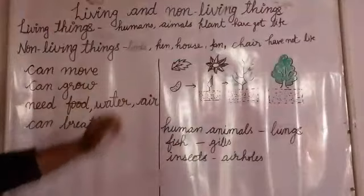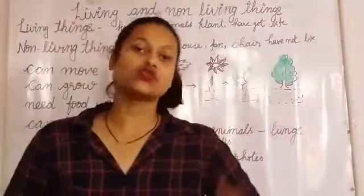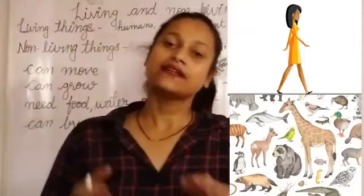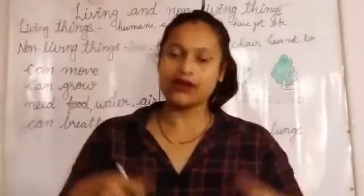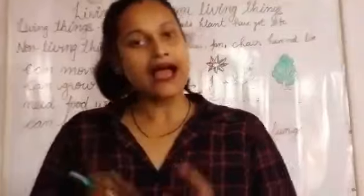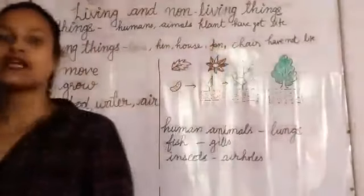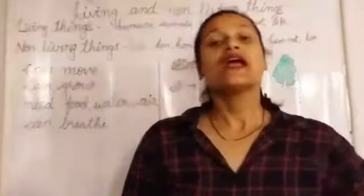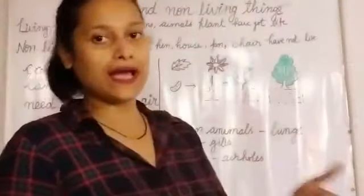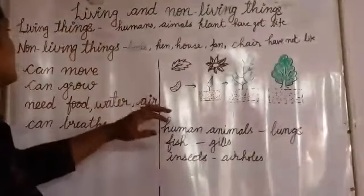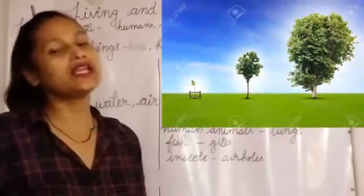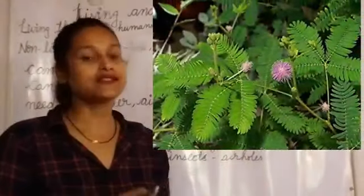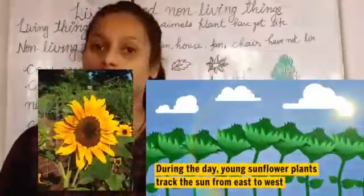First, living things can move from one place to another place. Human beings and animals can move from one place to another. Like I am standing here — I am a human being — and I can move to this side or that side. Even animals, they can go anywhere. Even plants can't go anywhere, but they show their movement. The touch-me-not plant closes its leaves when we touch it. The sunflower turns towards the sun.